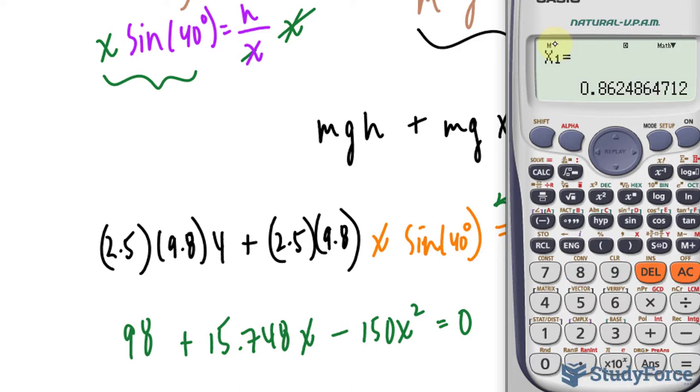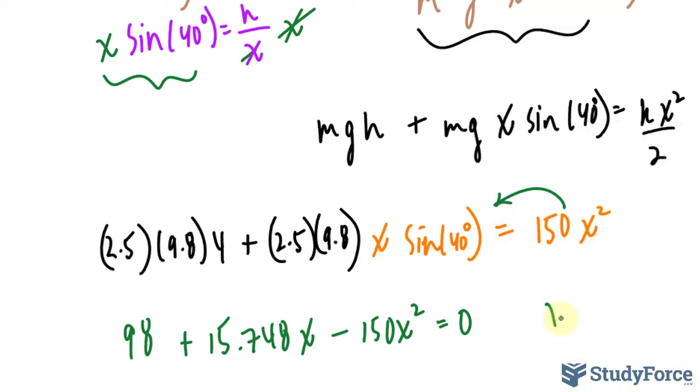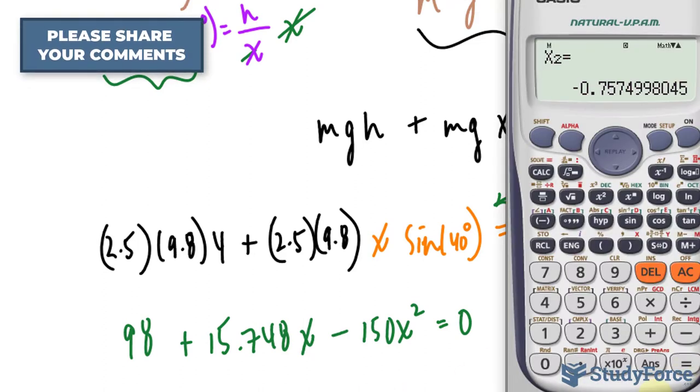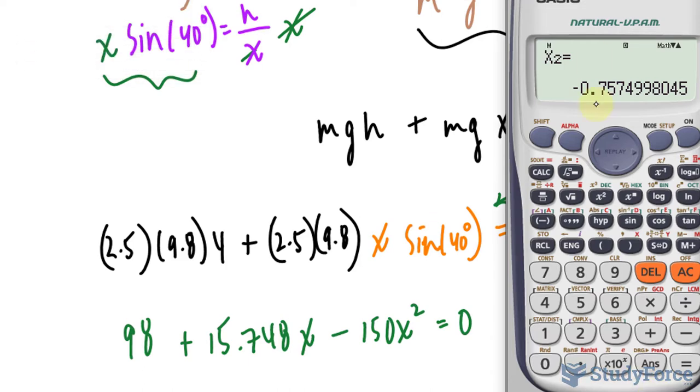And we get two values. We get one value that's 0.86. x is equal to 0.86. So the spring compresses 0.86 meters. And another value where it compresses negative 0.75. That makes no sense in relation to what we're discussing here, so we will ignore that.